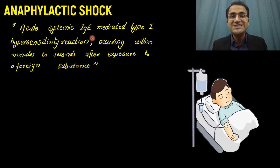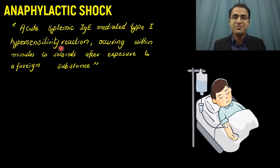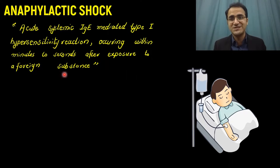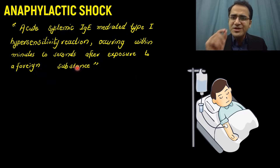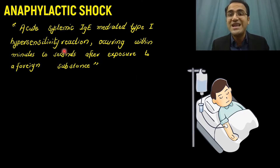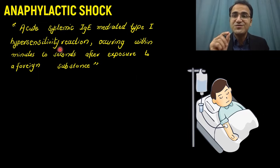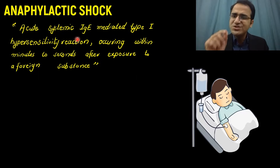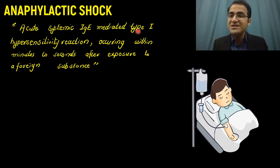Anaphylactic shock is basically an acute systemic IgE-mediated type 1 hypersensitivity reaction, occurring within minutes to seconds after exposure to a foreign substance. The patient is allergic to a foreign substance, and minutes to seconds after exposure, the patient develops an allergic hypersensitivity reaction. If this reaction occurs within minutes to seconds, it is usually type 1 IgE-mediated.